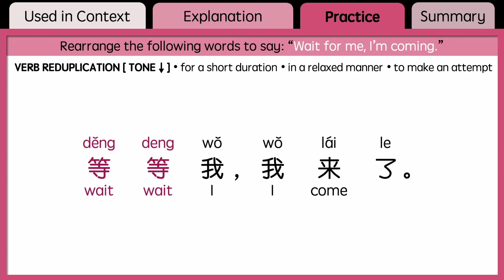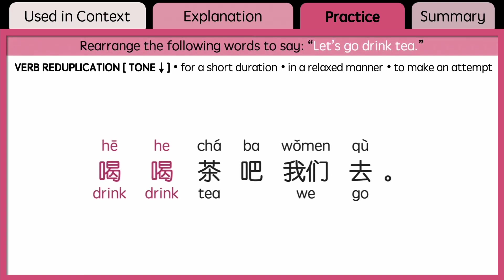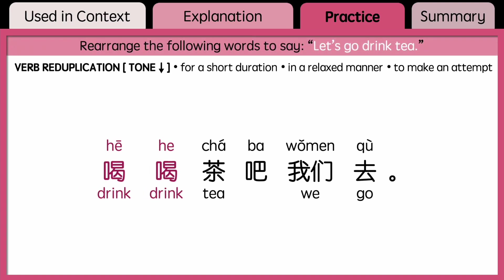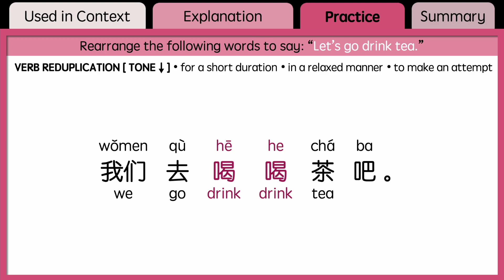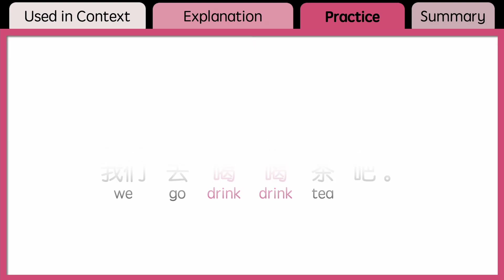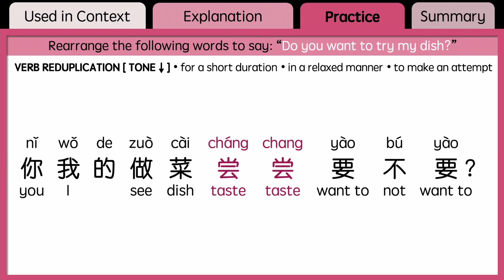The answer is 等等我. Rearrange the following words to say 'Let's go drink tea.' You can pause the video and think about it first. Rearrange the following words to say 'Do you want to try my dish?' You can pause the video and think about it first.